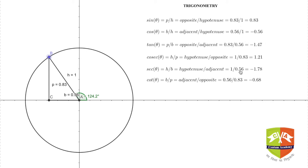Hence these ratios are for calculation purposes, but the actual values are 0.83, minus 0.56, minus 1.47, 1.21, minus 1.78, and 0.68. You can notice how values of the trigonometric ratios are changing as θ is increasing from 0 to 360 degrees with full coverage.